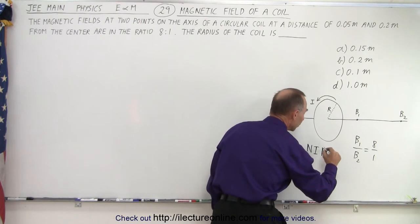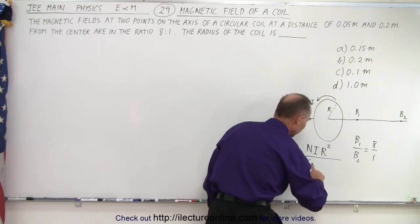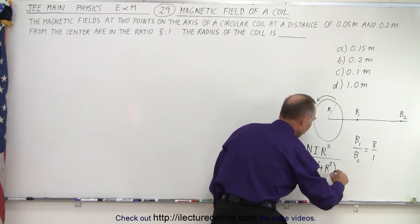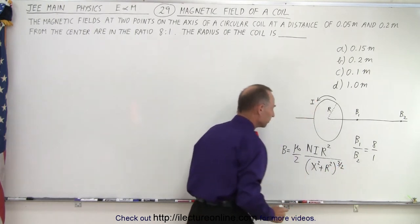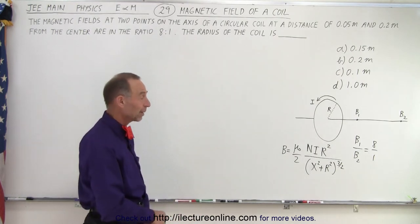So let's do the x first. So we go x squared plus r squared to the three halves power. If you don't remember the equation of course you're going to have a hard time solving this problem.